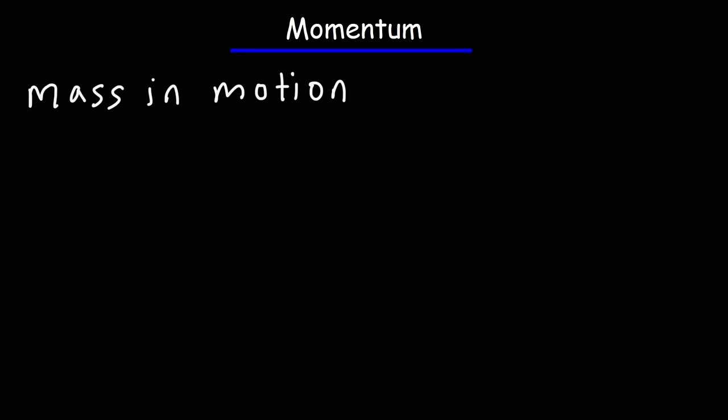One person described it as the quantity of motion. Momentum, indicated by the symbol P, is mass times velocity. Like velocity, momentum is a vector, so it has a magnitude and direction.